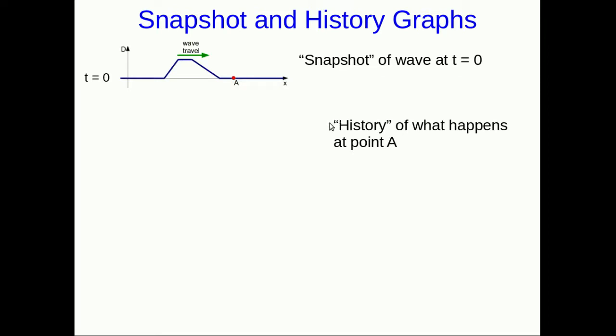Now we can draw the other kind of graph, which is a history of what happens at this point A. We call it a history graph. Now I haven't drawn this one. I've left these question marks here, because what I'm now going to show is how you figure out the shape of the history graph from thinking about the snapshot graphs. If you look at the point A, the wave hasn't reached it yet. The wave is coming along from the left, so it hasn't reached it yet. We can infer that this point A has been sitting still for some time. That's what I've drawn, a zero displacement for these times. These are negative times, so times before t equals zero.